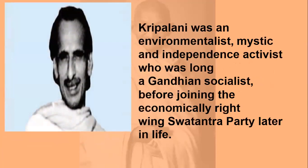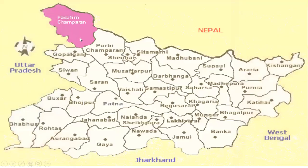Kripalani was an environmentalist, mystic, and independence activist who was long a Gandhian socialist before joining the economically right-wing Swatantra Party later in life. Champaran is located at the foothills of the Himalayas — there is West Champaran and East Champaran, and beneath that we have Muzaffarpur.